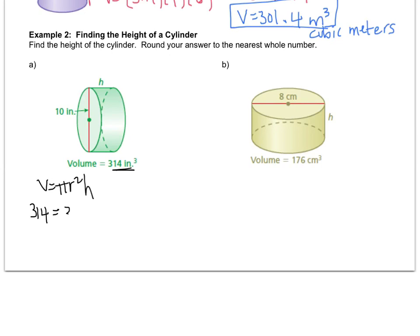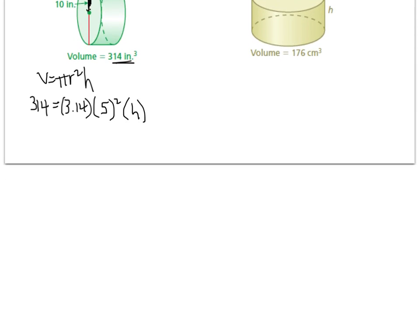Pi is 3.14, so plug that in. Be careful with the radius — the given value is a diameter, so the radius is 5. You can't blindly plug in numbers from the question; you have to think about what they stand for. The radius is 5, not the diameter. And since we don't know H, we leave it — our goal is to get the height by itself, so we need to perform operations to isolate H.